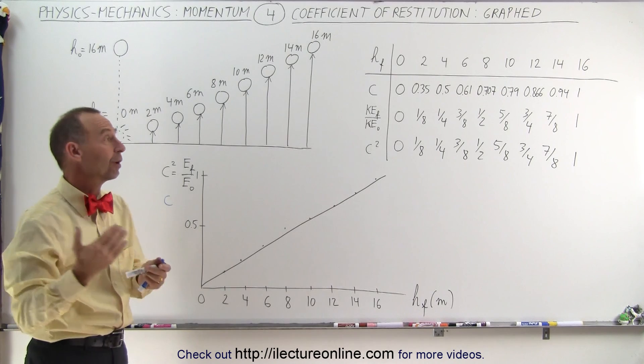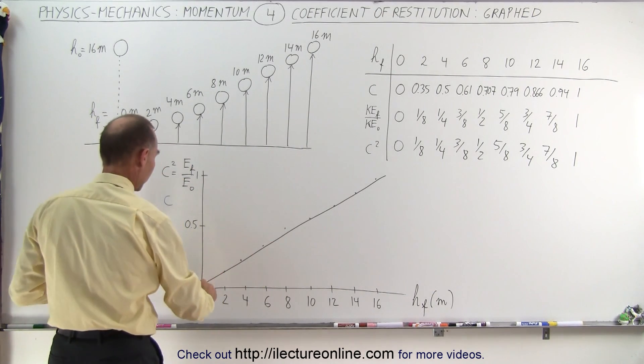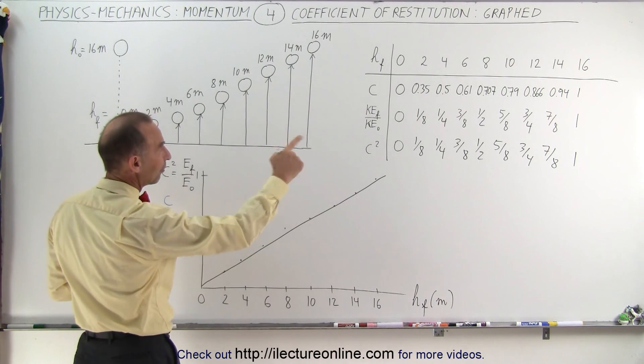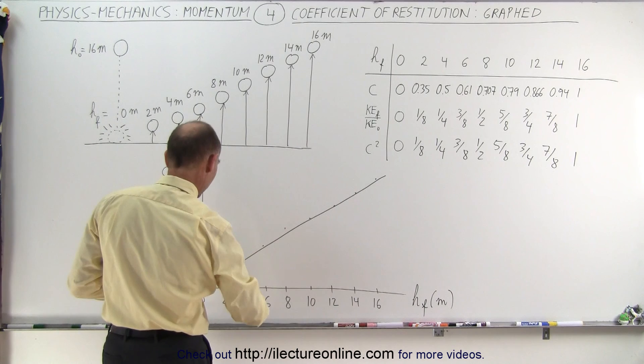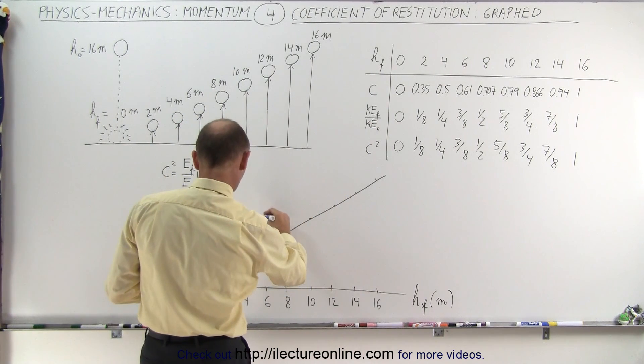But if we try to graph the coefficient of restitution in each of these cases, you'll notice that initially the number jumps up quite high. When it goes up to two meters, it's about 0.35. When it goes up to four meters, it's one-half. At six meters, it's 0.61.